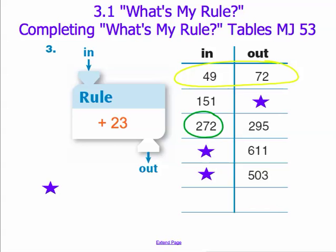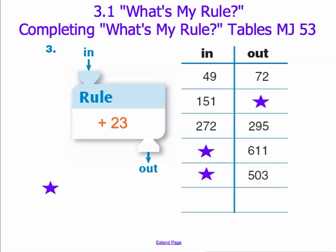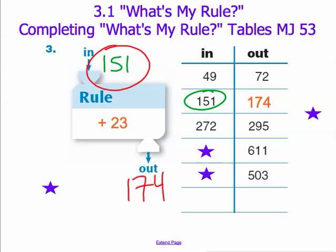Let's take this input, 272, apply our rule to it, and see if we come up with the output of 295. 272 plus 23 is in fact 295, confirming that our rule is adding 23. In the second set, our input is 151. We apply our rule to it, add 23, and we get the output of 174. 151 plus 23 gives us our correct output of 174.